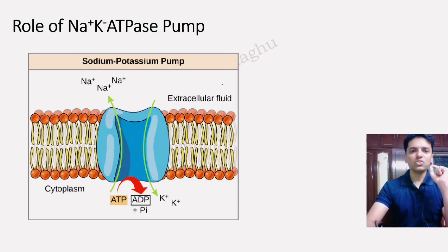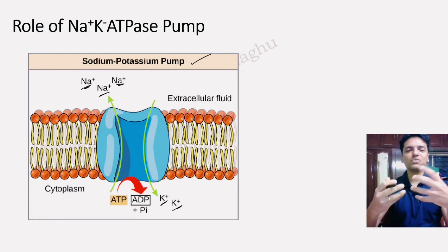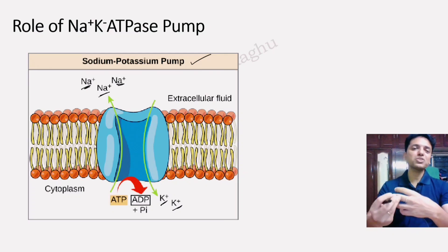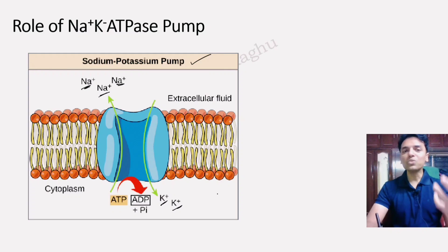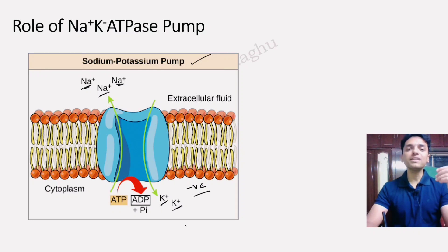The sodium-potassium pump is an electrogenic pump. It pumps three sodium ions outside and in exchange pumps two potassium ions inside. The number of positive ions pumped outside is more than those entering inside, making the inside of the cell membrane negative. However, the sodium-potassium ATPase is not very important in generating the resting membrane potential — its role is to help maintain the already generated resting membrane potential.